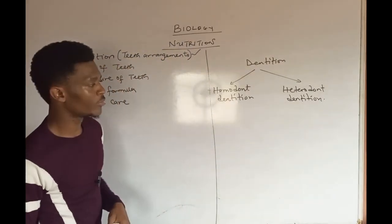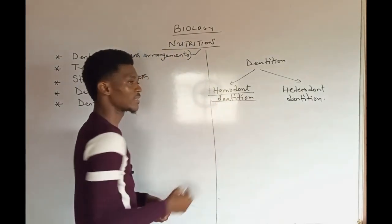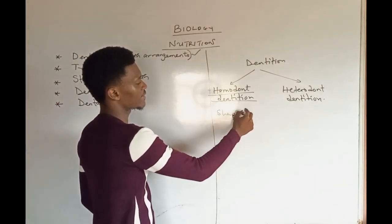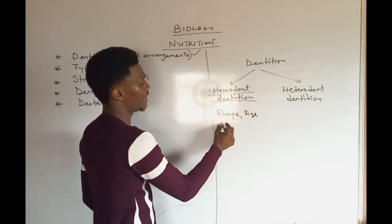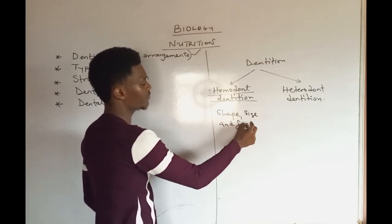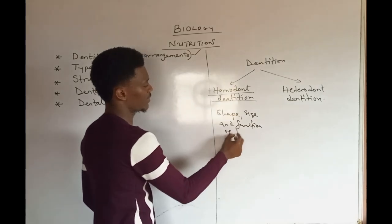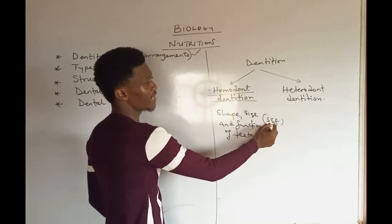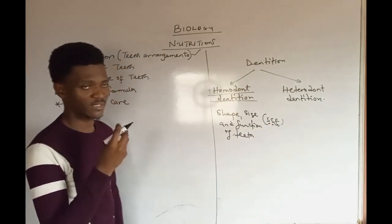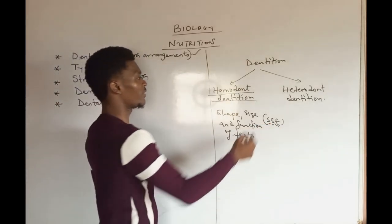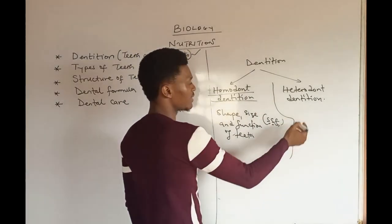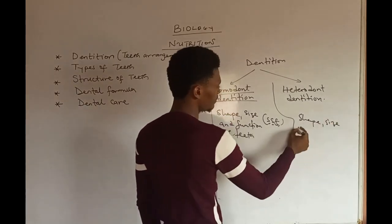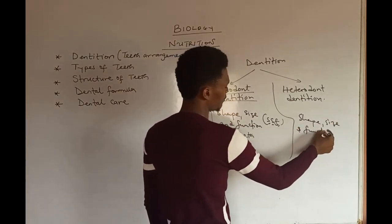When we talk about homodonts, we are referring to organisms that have the same shape, size, and function of teeth. My code is SSF — same shape, size, and function. While in the case of heterodonts, we have different shape, size, and function of teeth.